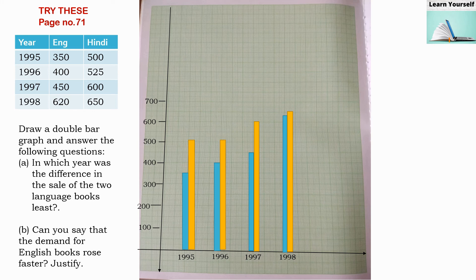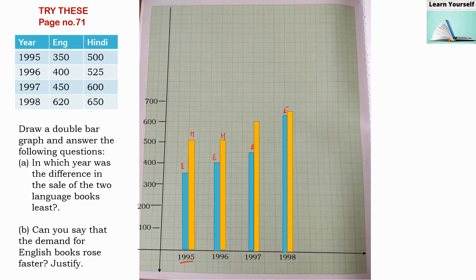I have used two different colors: blue for English books and yellow for Hindi books, for all four years. When you draw this kind of bar graph in your notebook, you can shade one bar lightly with your pencil so it looks different from the other. Make sure that whichever shading represents English books, you use that shading consistently for all English book bars throughout.